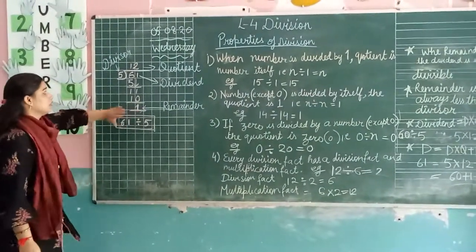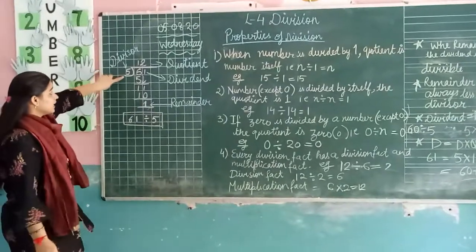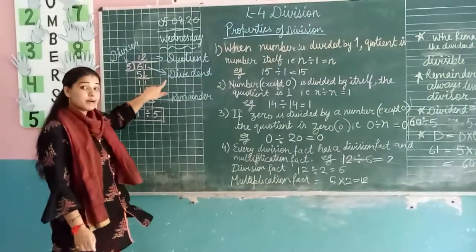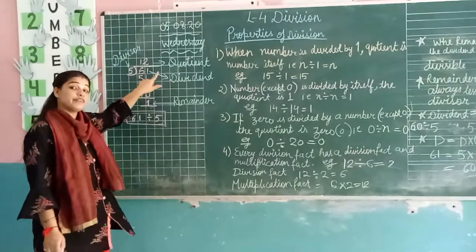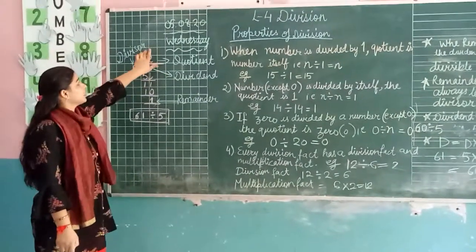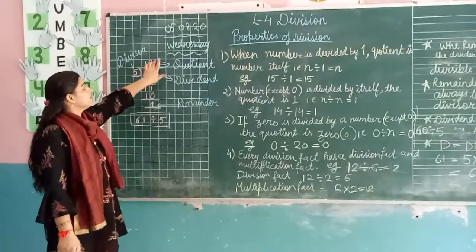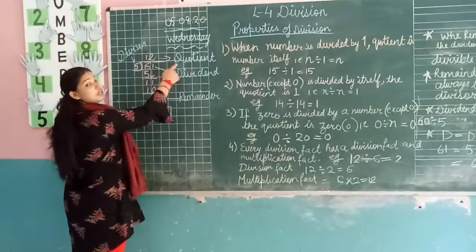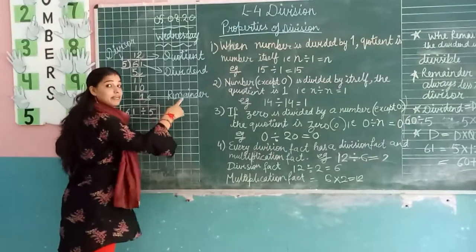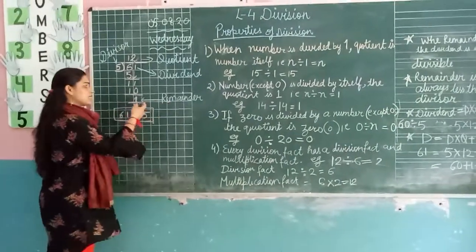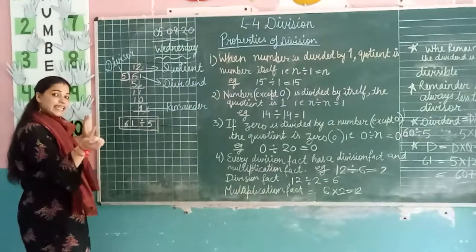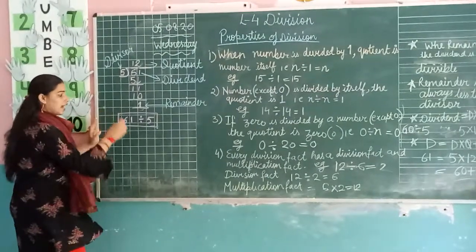So the number with which we divide is the divisor. The number which is divided is the dividend. The result we get after dividing is called the quotient, and what is left over is called the remainder. Sometimes we get 0 as remainder. Now let's take an example of that too.